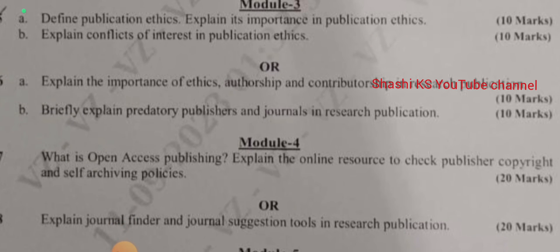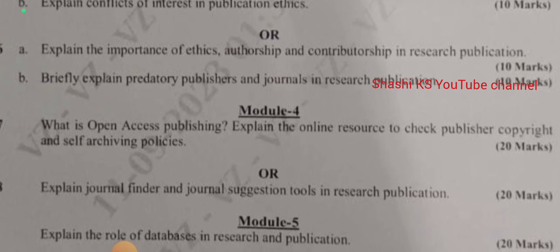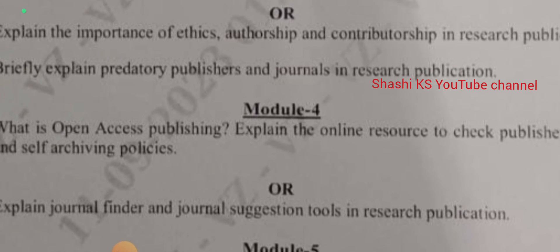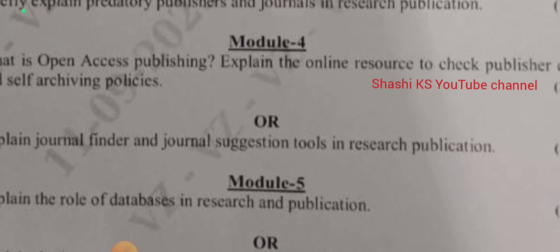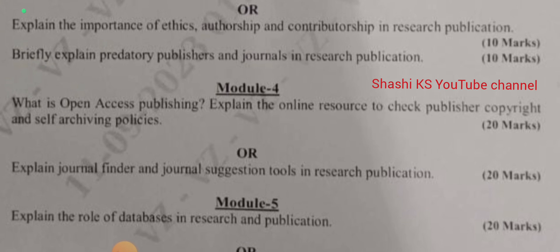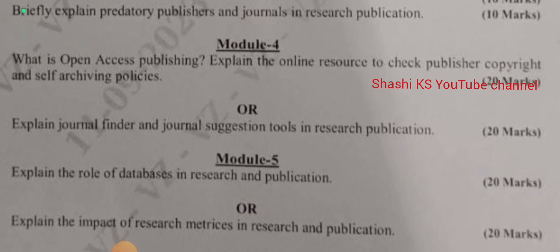The odd choice question was: explain journal finder and journal suggestion tools in research publication. In module 5, one single question was asked for 20 marks: explain the role of databases in research and publication. The odd choice question was: explain the impact of research matrices in research and publication, also asked for 20 marks.